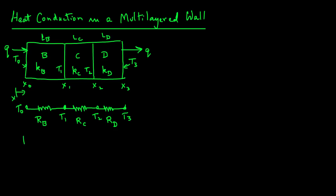Recall that the thermal resistance for a single layer is R equals L over KA. That is what we obtained in the other module. So we will go ahead and write the thermal resistance values for each of these layers. So we will have RB equals LB over KB A, RC equals LC over KC A, and RD equals LD over KD A.